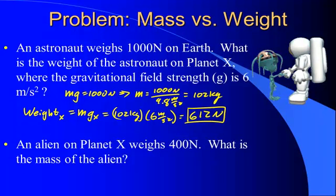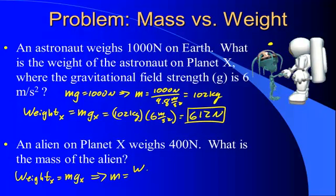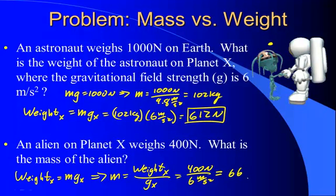On planet X, we meet an alien that weighs 400 newtons. What is the mass of that alien? Weight on planet X = mass × gravitational field strength of X, so mass = 400 newtons / 6 m/s² ≈ 66.7 kilograms. This is why on free body diagrams we prefer to write weight as Mg — because you already know the formula for weight.